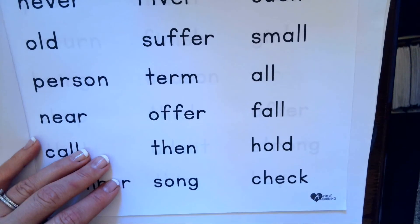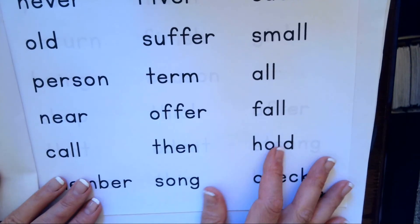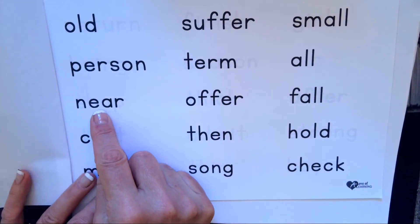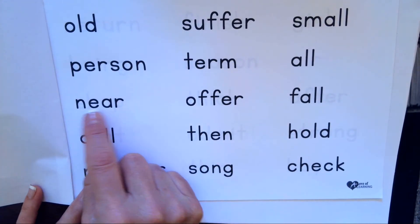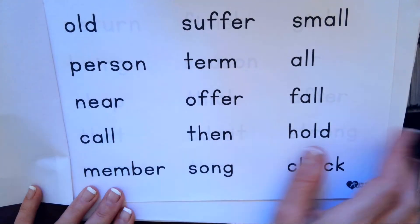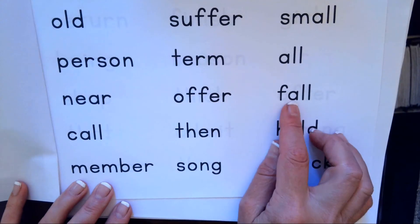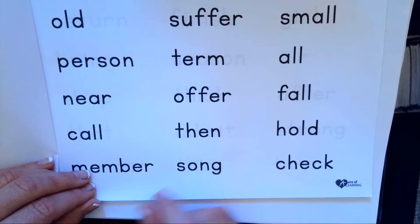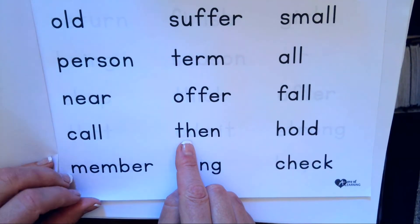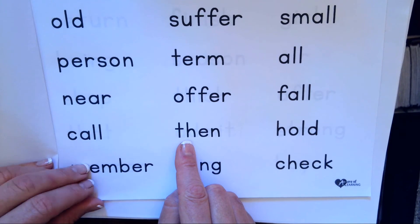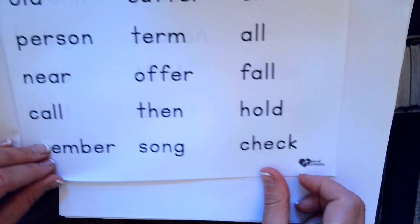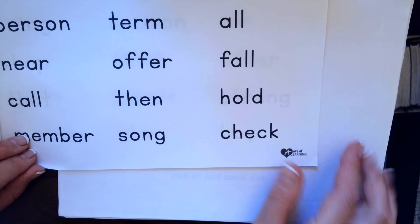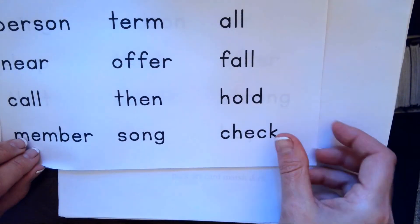And again, you're not going to have to read this way all the time, just for right now. E-A-R makes ear, N-E-A-R, near. A-L-L makes all, F-A-L-L, fall. T-H makes th, T-H-E-N, then. C-H makes ch, C-H-E-C-K, check.